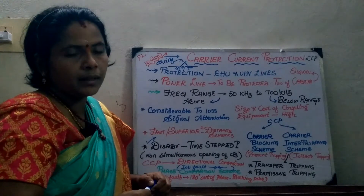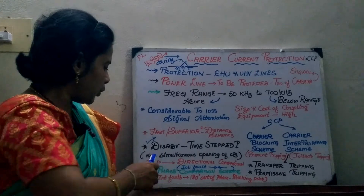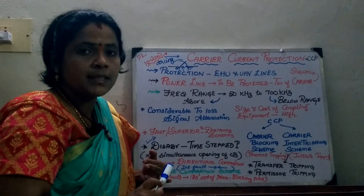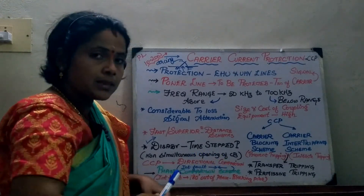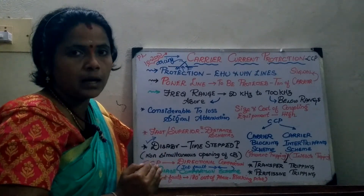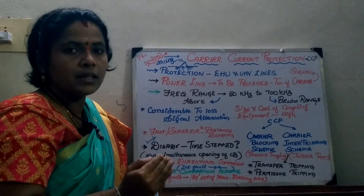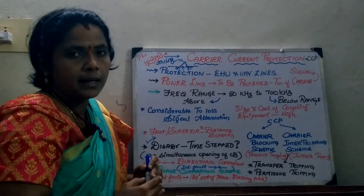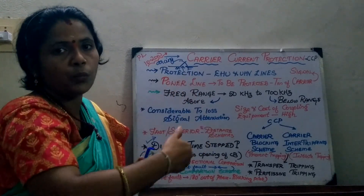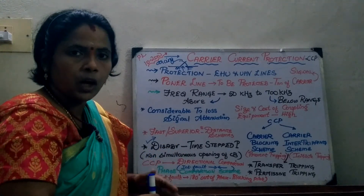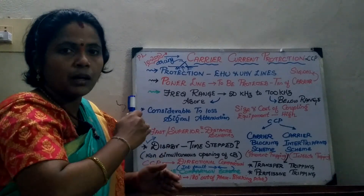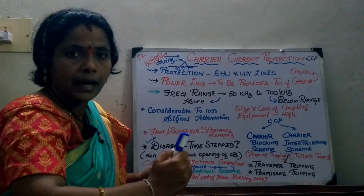There are two techniques for operating the carrier current protection scheme. One is the directional comparison scheme and the other is the phase comparison scheme. In the directional comparison scheme, if a fault occurs within its own zone it is called an internal fault, and the device detecting it is called unit protection. In case of an internal fault, current will flow towards the relay from both ends of the transmission line. In normal condition or external fault, current flows in through one end and out through the other end.